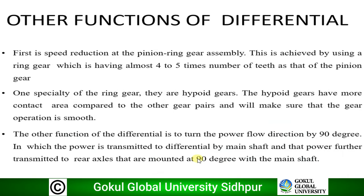Other functions of the differential: first is speed reduction at the pinion-ring gear assembly. This is achieved by using a ring gear with almost four to five times the number of teeth as the pinion gear. This large gear ratio brings down the speed of the ring gear in the same ratio, and since power flow at the pinion and ring gear are the same, such speed reduction results in higher torque multiplication. The second function is to turn the power flow direction by 90 degrees — power is transmitted to the differential by the main shaft, and further transmitted to the rear axle mounted at 90 degrees with the main shaft.